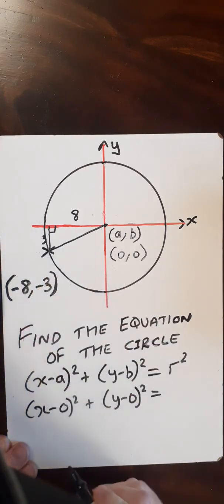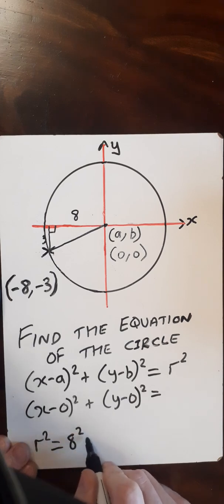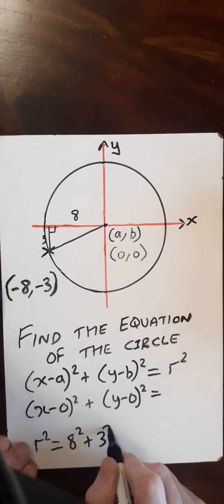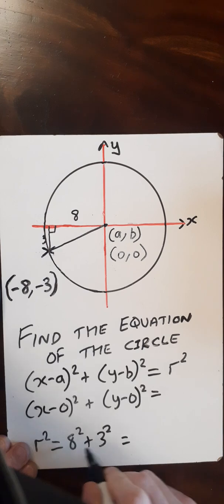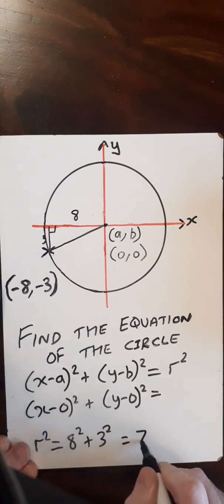Now using Pythagoras, r² = 8² + 3². So that equals 64 + 9, which is 73.